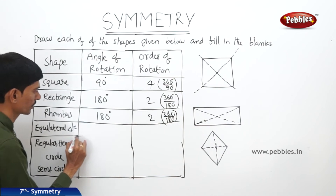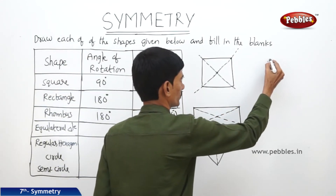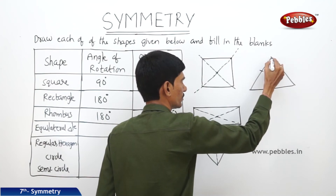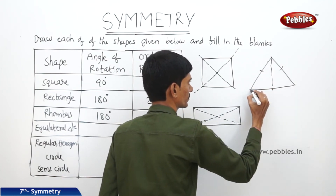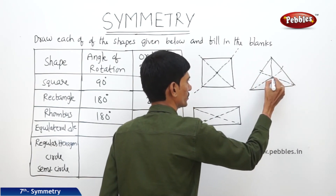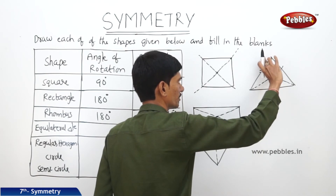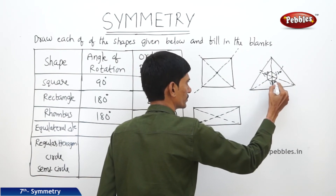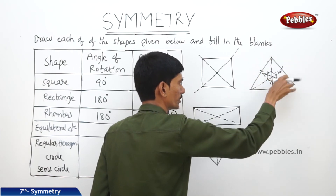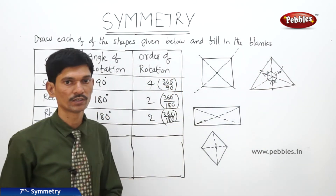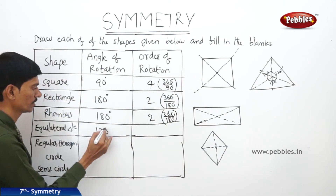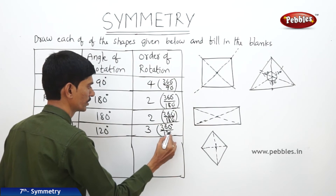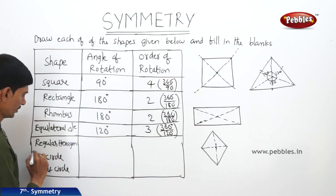Now in case of an equilateral triangle, if you rotate it — first join the medians to find the center point. Through this fixed point, each section is 120 degrees. So if you rotate the equilateral triangle through 120 degrees, we will get back its original position. The angle of rotation is 120 degrees. Then the order of rotation is 3, because 360 degrees divided by 120 degrees equals 3.